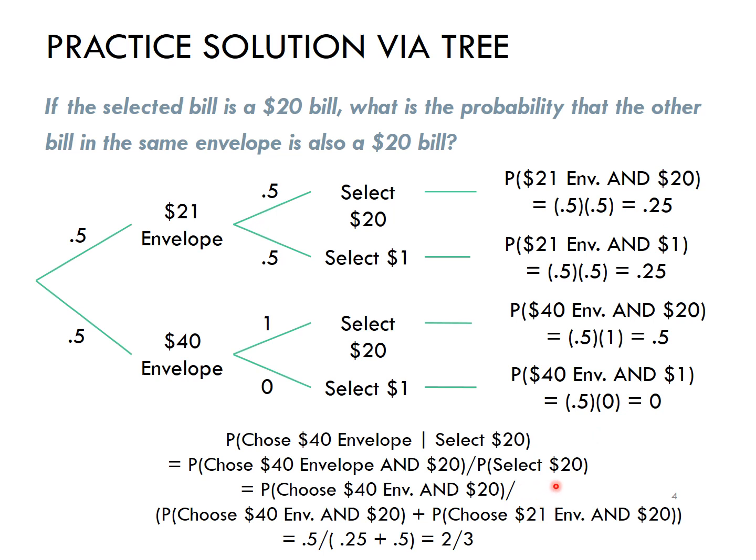Then, my conditional probability of choosing a $40 envelope given I've selected a $20 bill is the AND probability of the $40 envelope and the $20 bill of .5 divided by the .75, that was my total probability of selecting the $20 bill, which gives me the same two-thirds answer I got from the table.